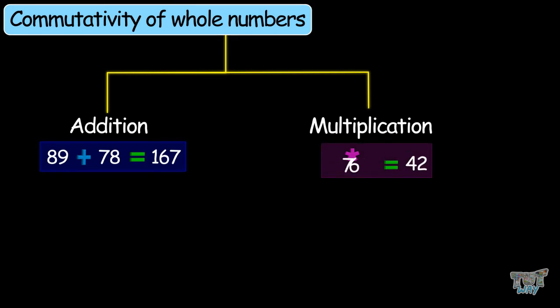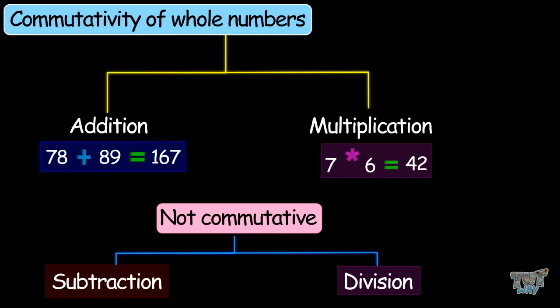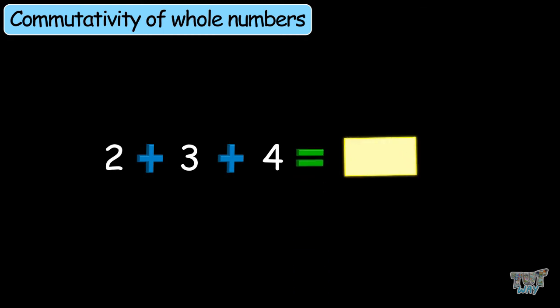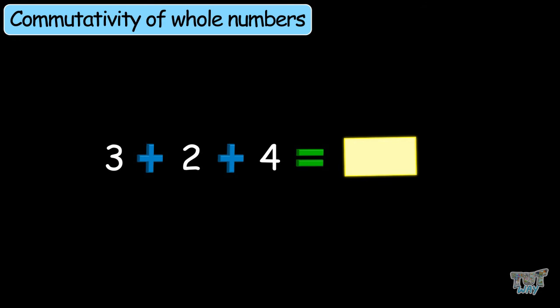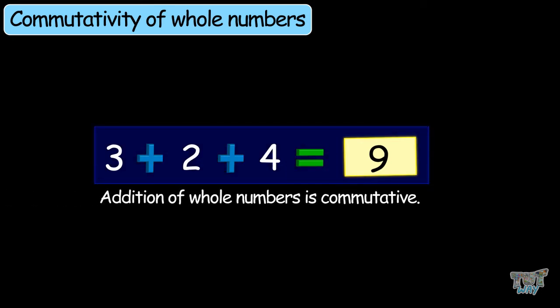What did we learn? We learned that addition and multiplication are commutative for whole numbers, but subtraction and division are not commutative. Let's revise it all with some examples. 2 plus 3 plus 4 — the answer is 9. So what will be the answer of 4 plus 3 plus 2? The answer is still 9. What will be the answer of 3 plus 2 plus 4? Answer is still 9. This example depicts that addition of whole numbers is commutative — you can add them in any order.